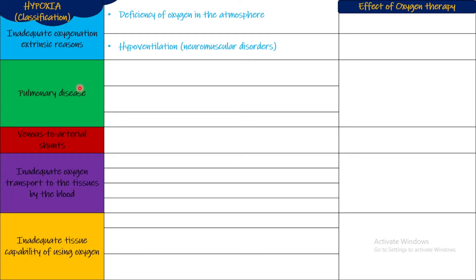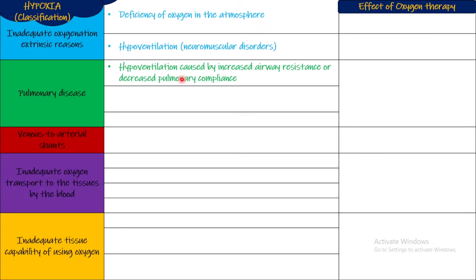The next reason is pulmonary disease. In pulmonary diseases, what has happened in the lungs is that oxygen is not going from the lungs into the blood. Number one cause is hypoventilation caused by increased airway resistance or decreased pulmonary compliance. Hypoventilation here occurs due to internal rather than extrinsic reasons. Airway resistance increases in cases of asthma and COPD. Decreased pulmonary compliance occurs in restrictive lung disease — for example in pulmonary fibrosis, pulmonary compliance decreases.